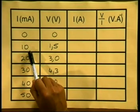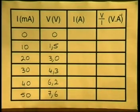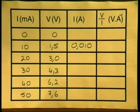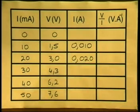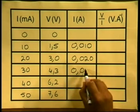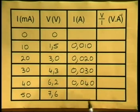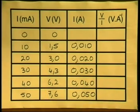10 milliamperes divided by 1000 gives a value of 0.010 amperes. 20 milliamperes gives 0.020 amperes. Then 0.030 amperes, 0.040 amperes, and finally 50 milliamperes gives 0.050 amperes. Now that we've got all our values in the correct SI units, let's do the calculation to work out the ratio between potential difference and current — in other words, V divided by I.